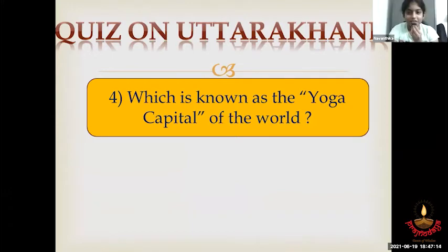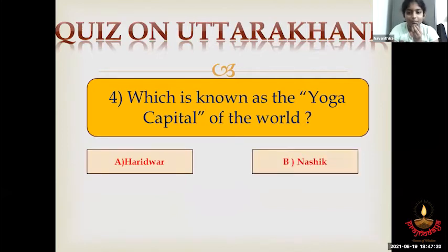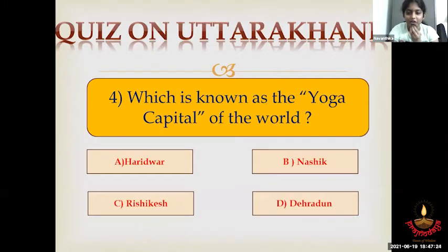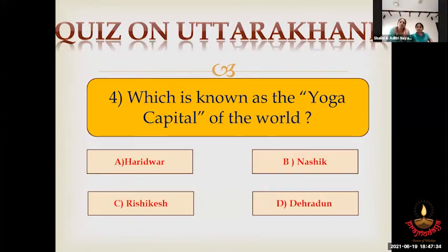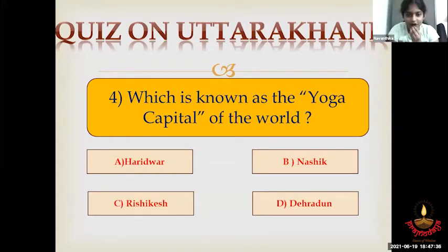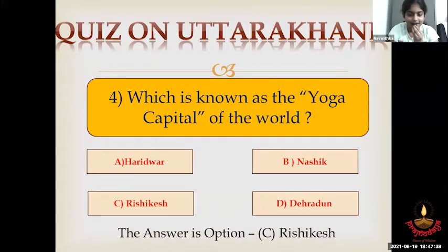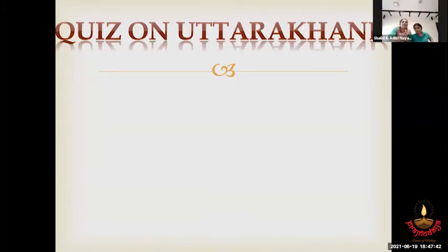Question 4: Which is known as the yoga capital of the world? Option A, Haridwar. Option B, Nashik. Option C, Rishikesh. Option D, Dehradun. This question goes to Aditri. Haridwar. Sorry, it is the wrong answer. The correct answer is Option C, Rishikesh.